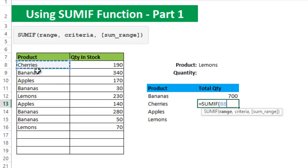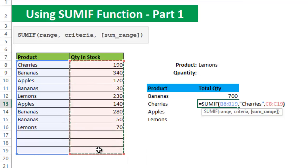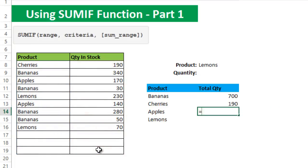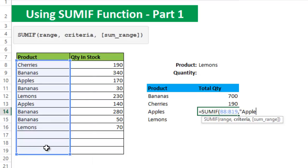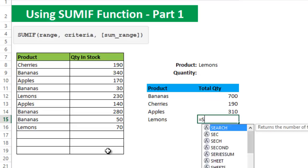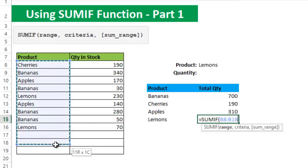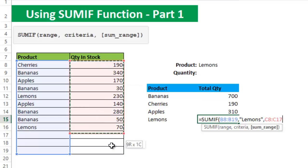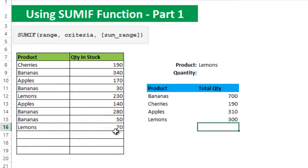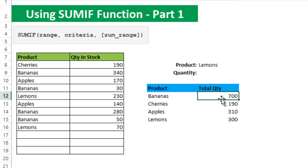For cherries: SUMIF, range, comma, criteria is cherries, and the sum range is the same as the previous example. Press Enter to get the result. For apples: range, criteria apples, and sum range. The same for lemons: range, criteria lemons, and sum range. Press Enter. Now you get the total quantity of each product based on the criteria for your calculation.